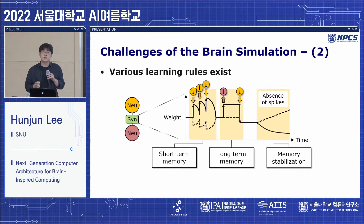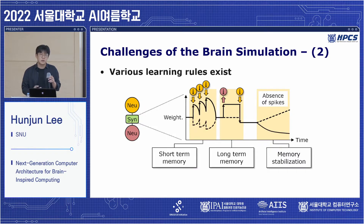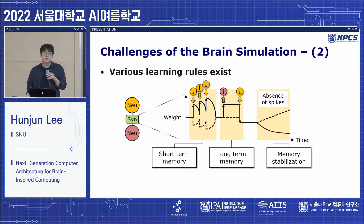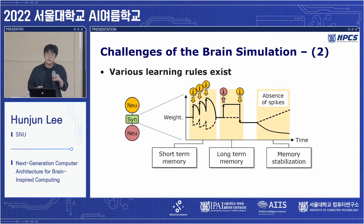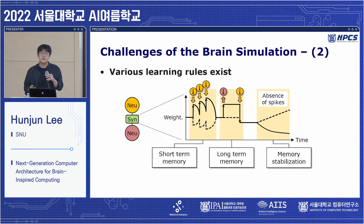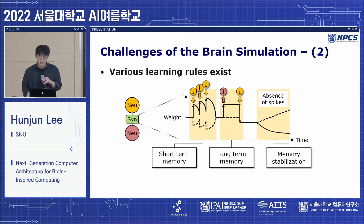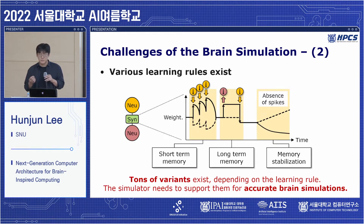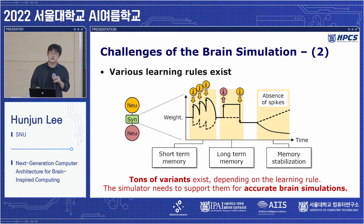The second challenge is that, similar to neural models, various learning rules exist. Some learning rules are only temporary, representing short-term memory of the synapses. Others are permanent, depending on the spiking activity of neurons. There are also homeostatic changes that increase or decrease the weight even in the absence of spikes. Tons of variants exist depending on the learning rule, and the simulator needs to support them.